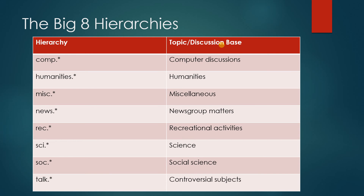Newsgroups continue as discussion forums under the alternative banner, but the introduction of binary coding to Usenet was a game-changer. The shift away from text documents allowed complex files to be uploaded, and due to Usenet's low profile and privacy, the alternative hierarchy became a major facilitator of illicit online activity, from child pornography to copyright infringements.